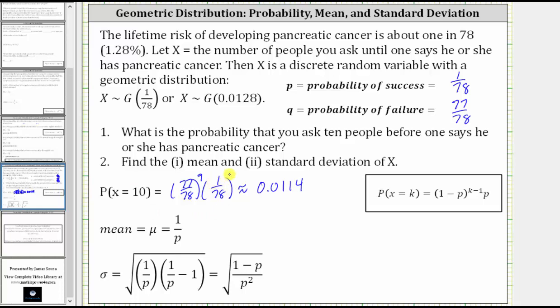Part two, we're asked to find the mean as well as the standard deviation of X. The mean is equal to one divided by p, where p is the probability of success, which is equal to one divided by 1/78. Remember, dividing by a fraction is the equivalent to multiplying by the reciprocal. This is equal to one times 78 over one, or 78.